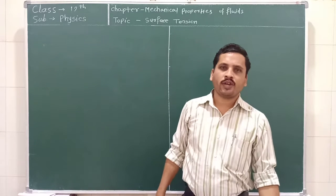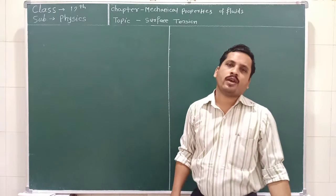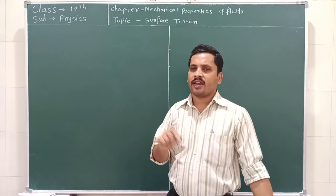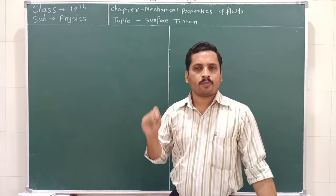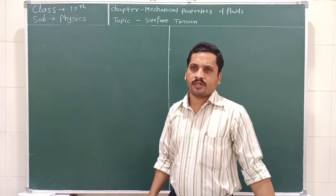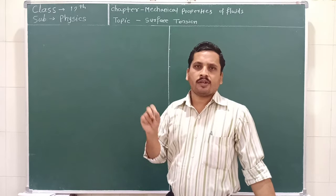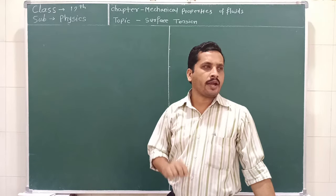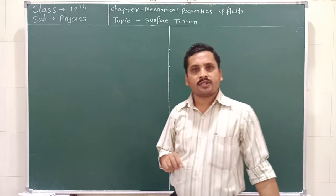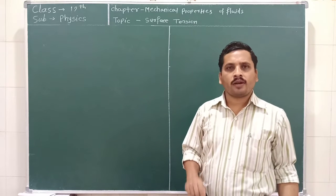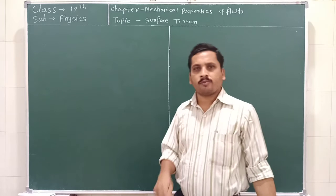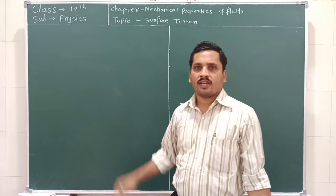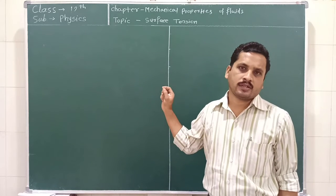Good morning students. Today we are going to see a very important property of the liquid which is called surface tension. We have seen that a mosquito and a spider can walk on the water surface, a greased needle can float on the water surface, and the shape of a drop and soap bubble is spherical. So what is the property, what is the phenomena responsible for such properties? We can say that surface tension is responsible for such phenomena.